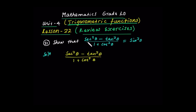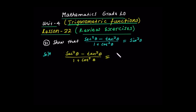This shows how 6 sin squared theta minus 10 tan squared theta over 1 plus 4 cot squared theta is equal to sine squared theta. Six sin squared theta minus tan squared theta over one plus four cot squared theta is equal to one plus tan squared theta.